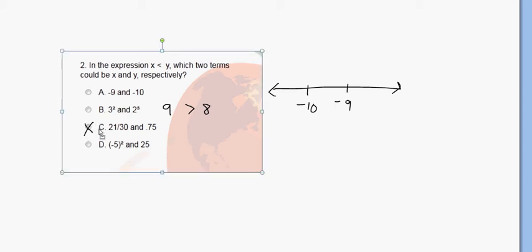So you could, by process of elimination, decide that choice C is correct, which it is. If you want to see this more precisely, notice that 21 over 30, we can simplify that fraction by noticing that they have a common factor.